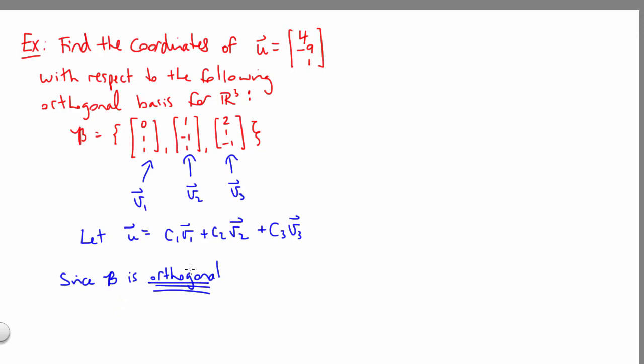Since B is an orthogonal basis, there's a fast way to find these coefficients c1, c2, c3. To get c1, we're going to take the dot product of u with our first basis vector and divide it by the dot product of that basis vector with itself.